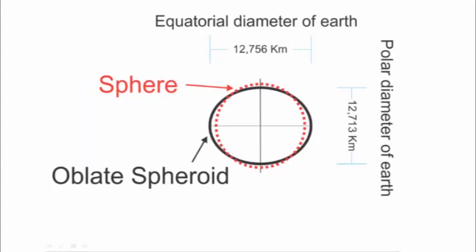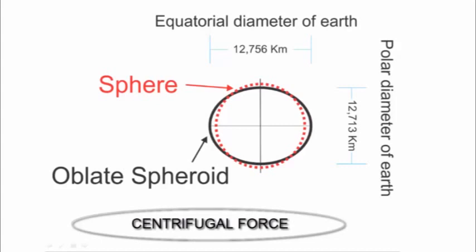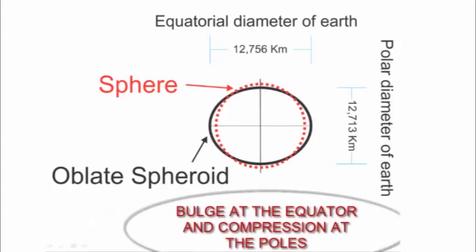The diameter of the Earth varies at the equator and at the poles. The diameter at the equator is 12,756 km while the polar diameter of the Earth is 12,713 km. This difference in diameter is due to the centrifugal force of Earth's rotation at a great speed, which forms a bulge at the equator and compression at the poles.